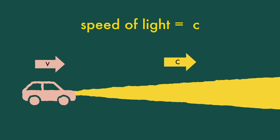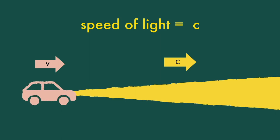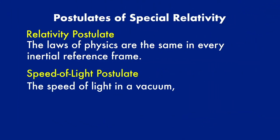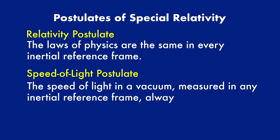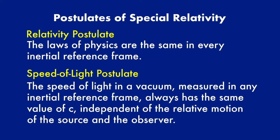Einstein is such an open-minded person: if the mathematics of Maxwell's equations are consistent with the experiments and the experiments are accurate, then the results must be correct. We have to be objective and adjust our beliefs based on facts. Since Einstein had a solid basis, he assumed that the speed of light is the same for all observers regardless of their relative motion. This gave birth to the second postulate: the speed of light in vacuum measured in any inertial reference frame always has the same value C, independent of the relative motion of the source and the observer.